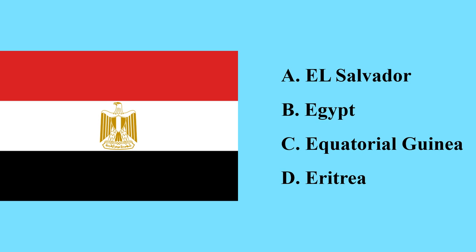Egypt is a transcontinental country — the majority of its territory is found in Africa but it has some portions geographically located in Asia. Egypt is also known for its pyramids.